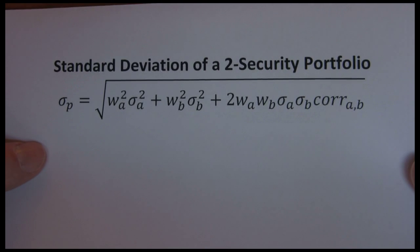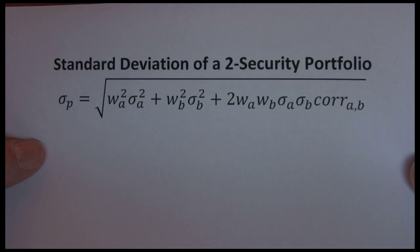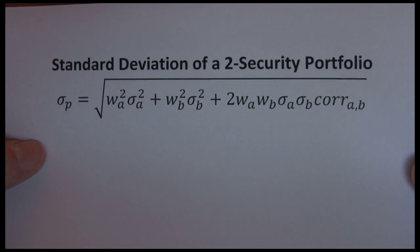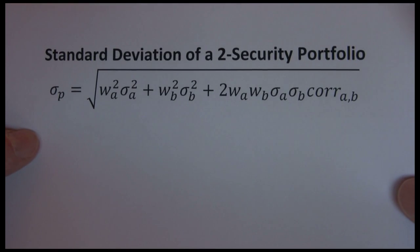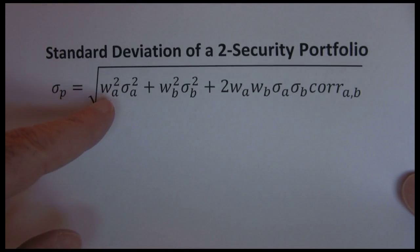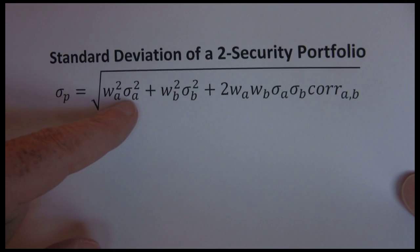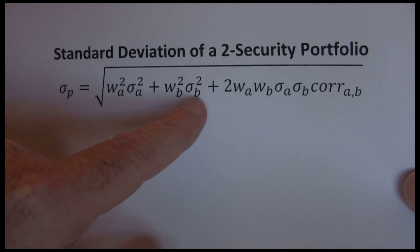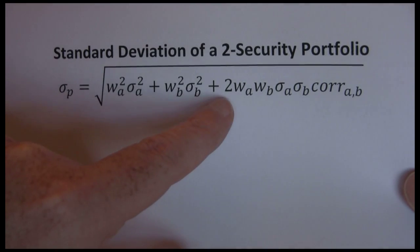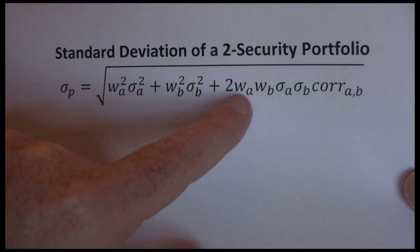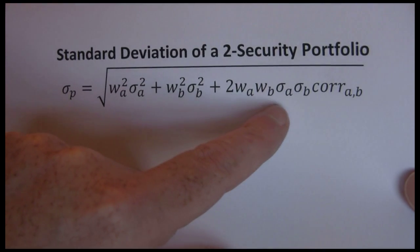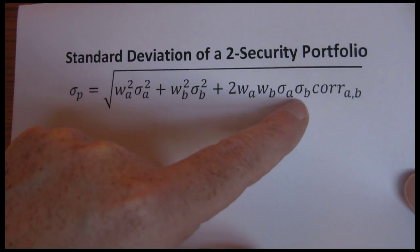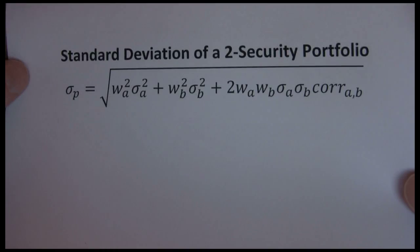As I mentioned, four, five, six stocks, the formula just starts to explode as we add more stocks because there are more pairs in there to look at. So here, we want to take the weight in a squared times the standard deviation of a squared plus weight in b squared times standard deviation of b squared plus two times the weight in a times the weight in b times the standard deviation of a times the standard deviation of b times the correlation between a and b.